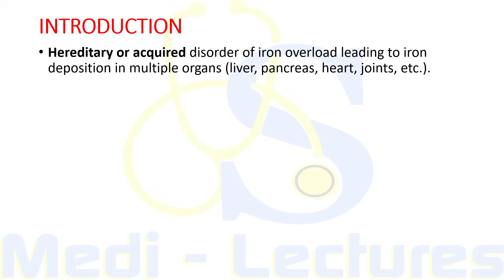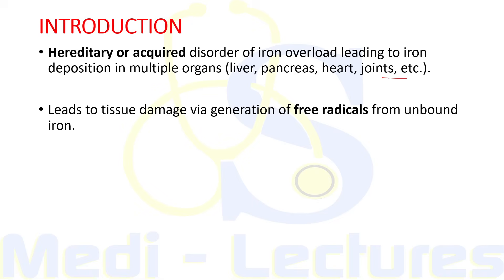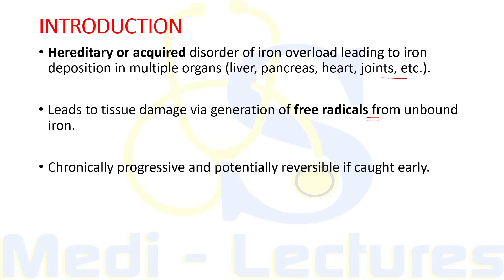Hemochromatosis is a hereditary or acquired disorder of iron overload leading to iron deposition in multiple organs like liver, pancreas, heart, and joints. It leads to tissue damage via generation of free radicals from unbound iron. The most important point is that although this disorder is chronically progressive, it can be reversible if caught early.